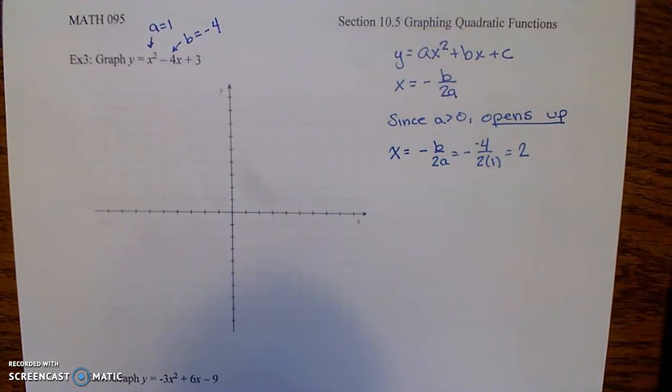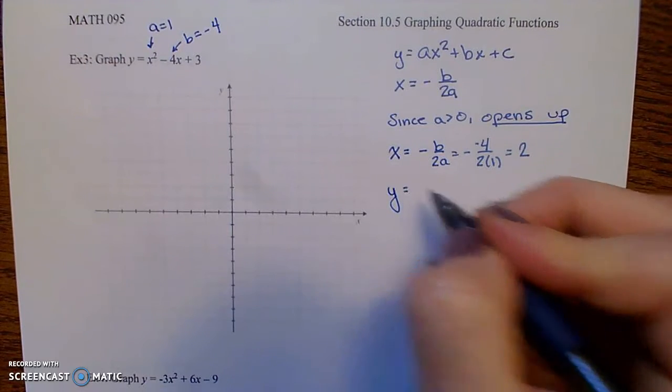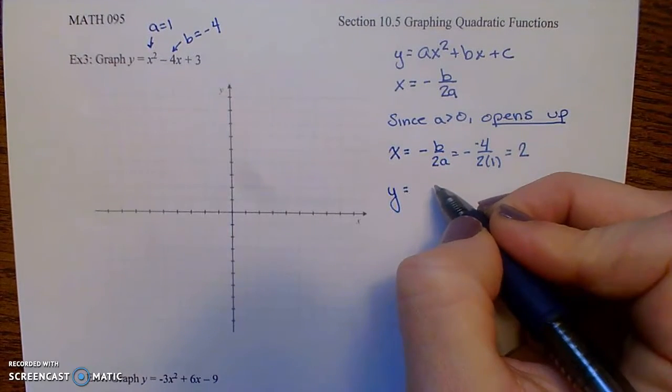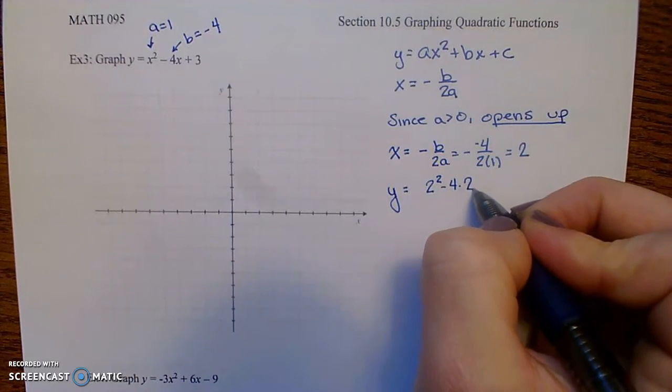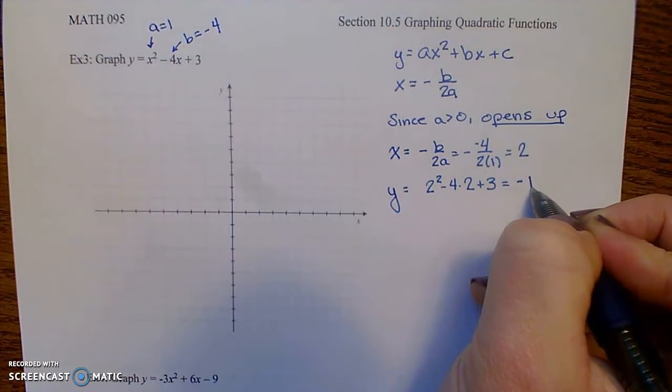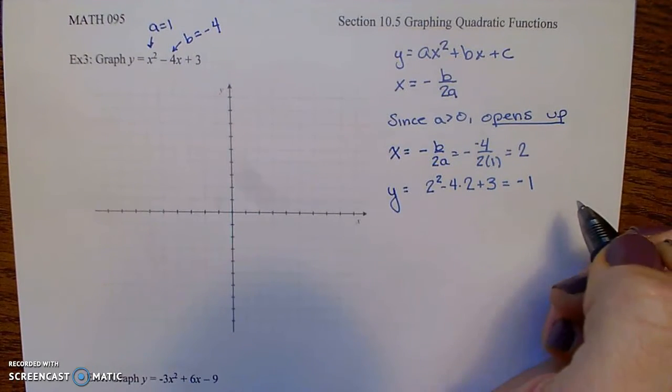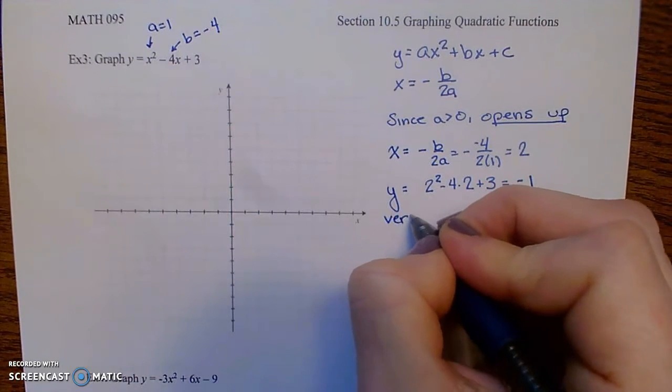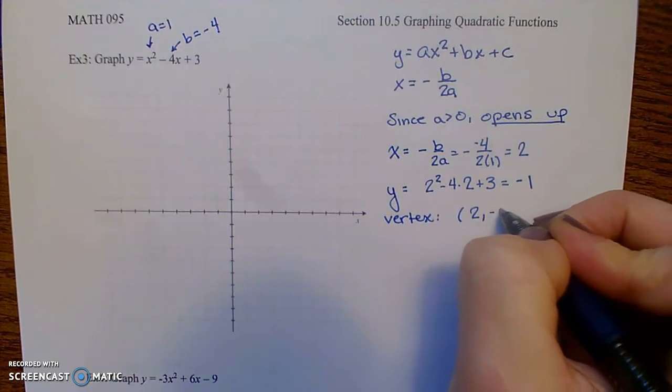And now we plug that in to get the y-coordinate of the vertex. So y is equal to 2 squared minus 4 times 2 plus 3. That's negative 1. So the vertex is 2 comma negative 1.